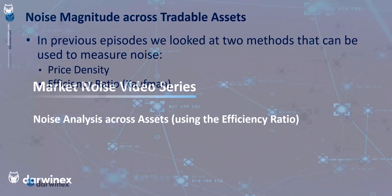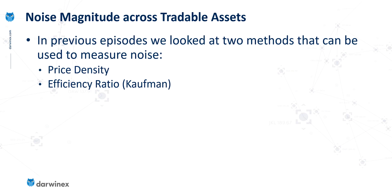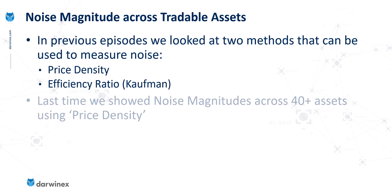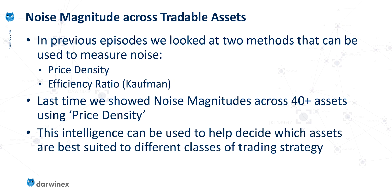We now move into a little bit more detail looking at the second method of measuring noise, which is the efficiency ratio. Just like last time we looked at 42 different assets and saw how they stacked up in terms of price density, we now do the same for this second method. As a reminder, one of the reasons we might want to do this is because the intelligence we gain can then help us to decide which assets are best suited to different classes or types of trading strategy.